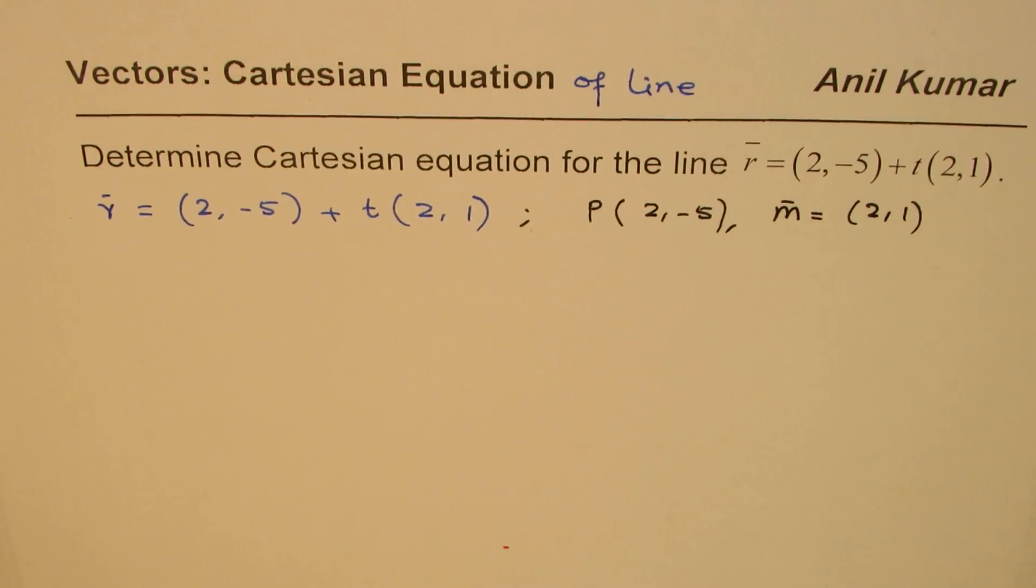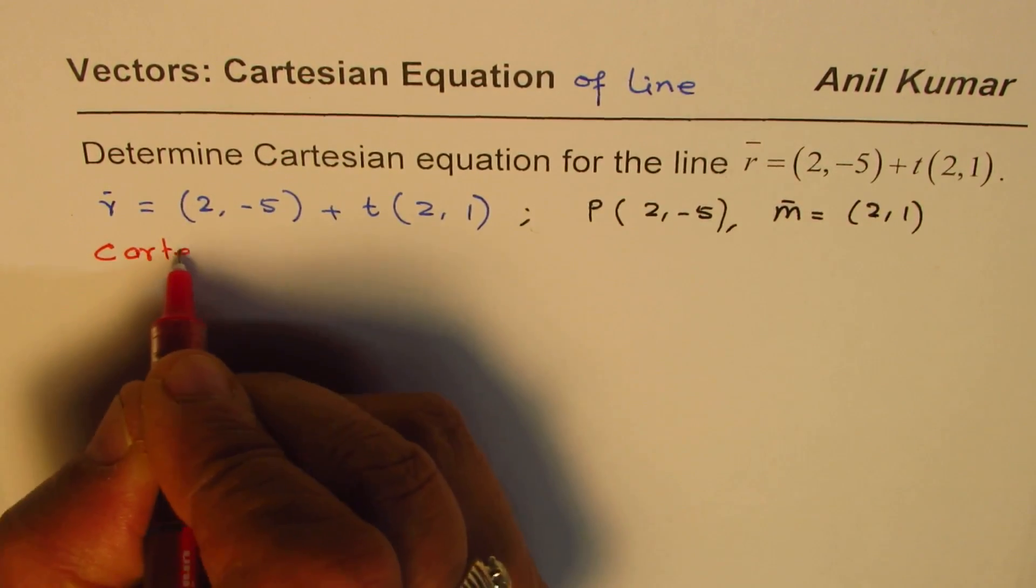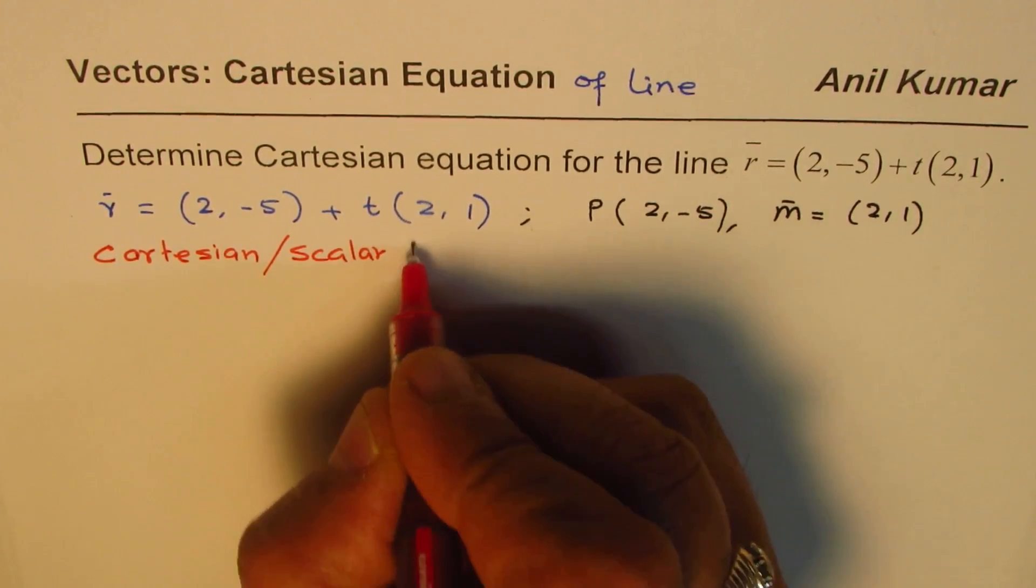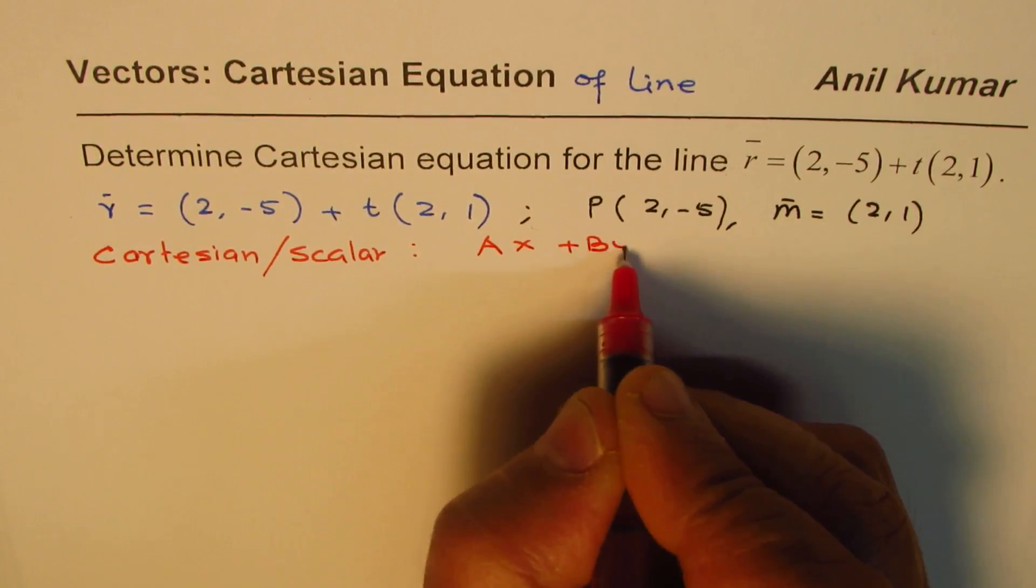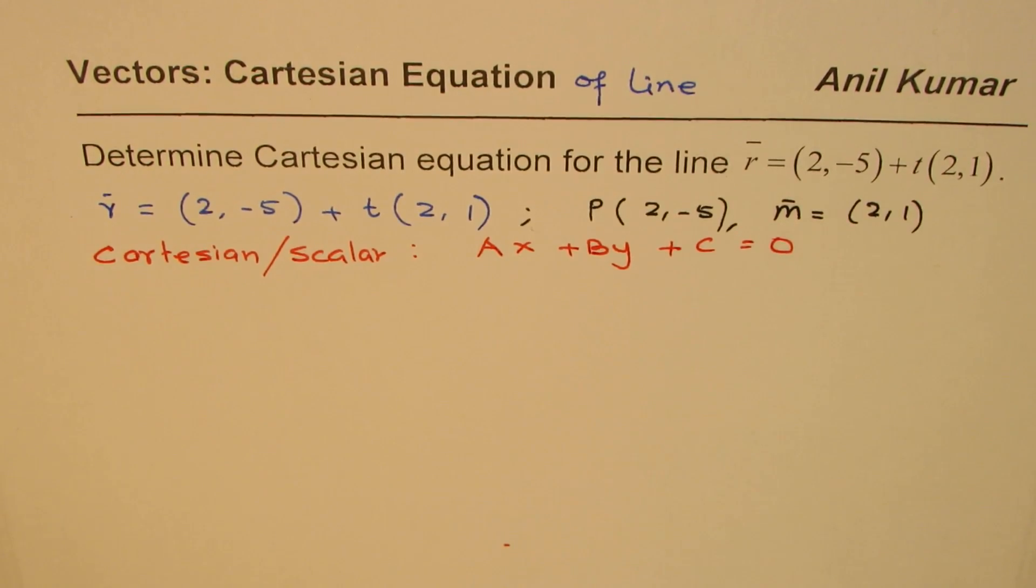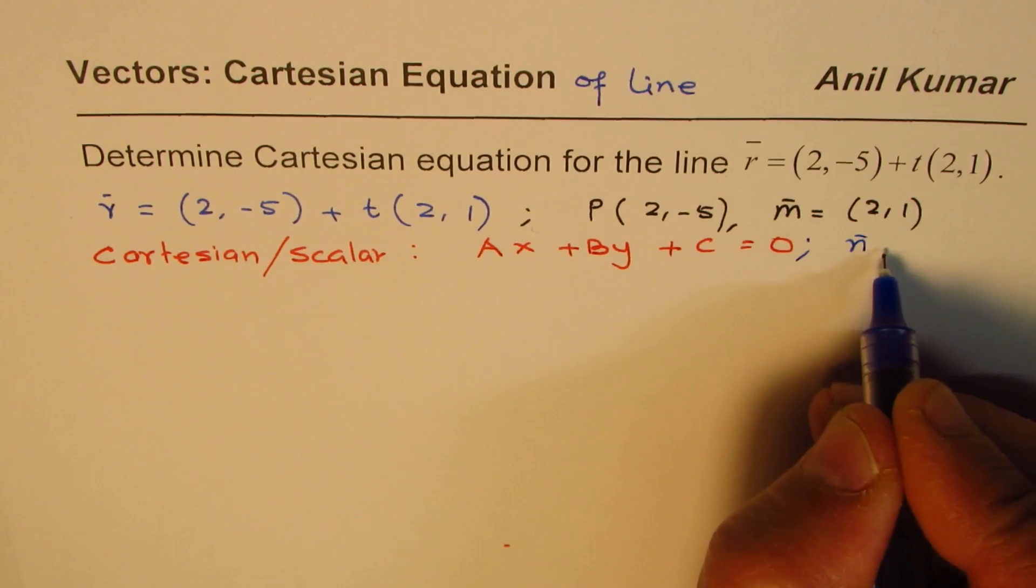So what is Cartesian form? Let me write down Cartesian form also. In Cartesian or sometimes we say scalar form, the equation is Ax + By + C = 0. And what do we need here?